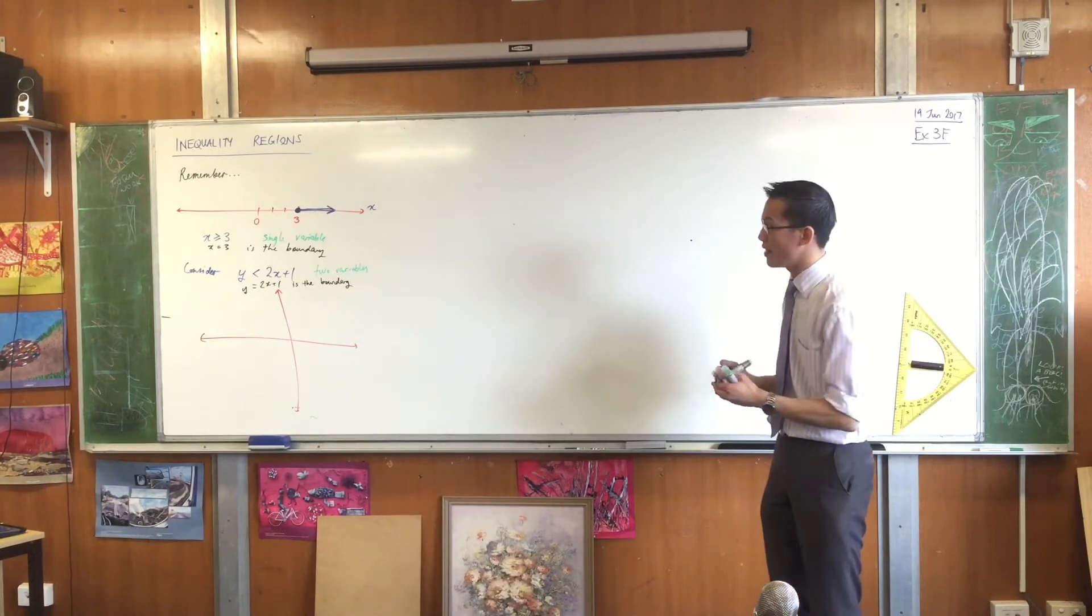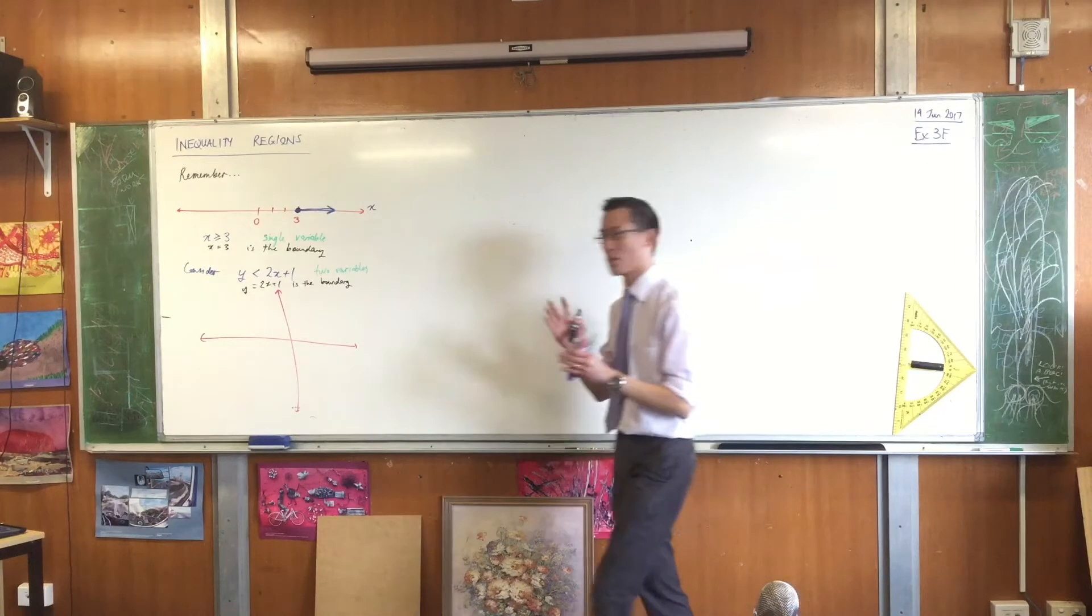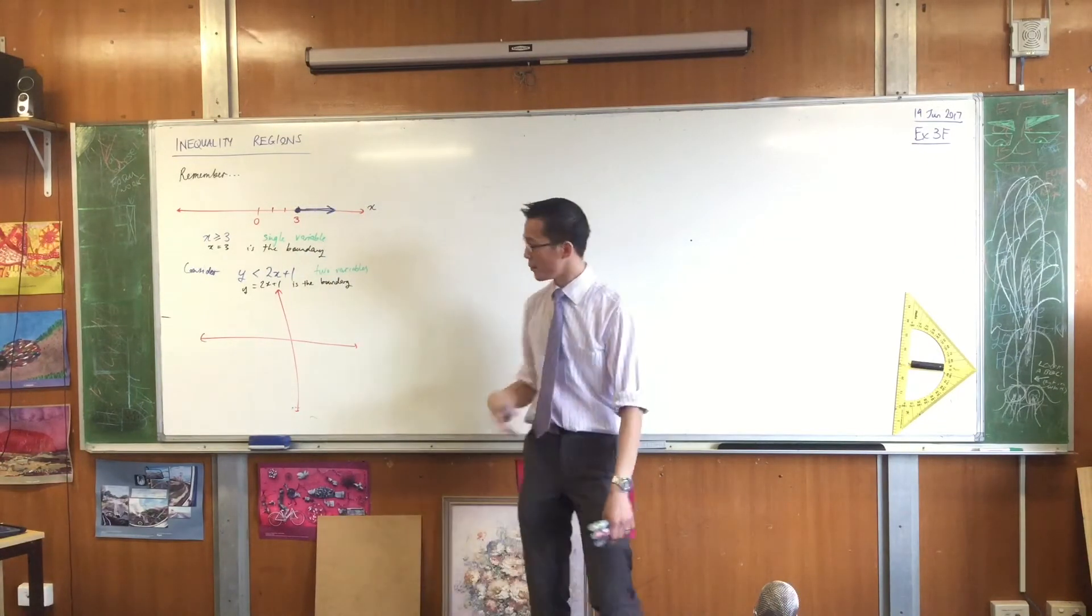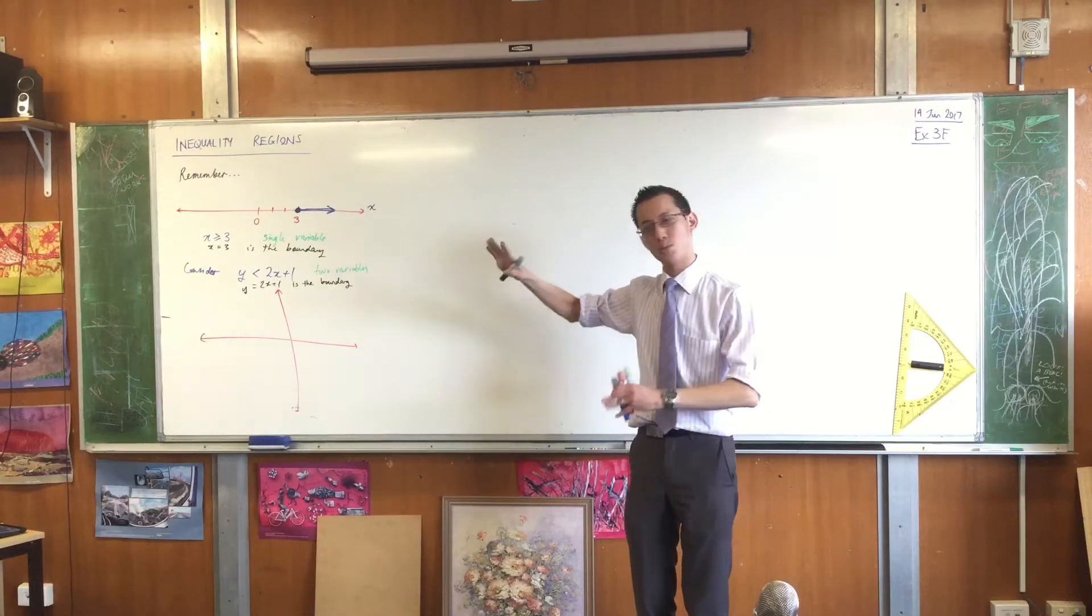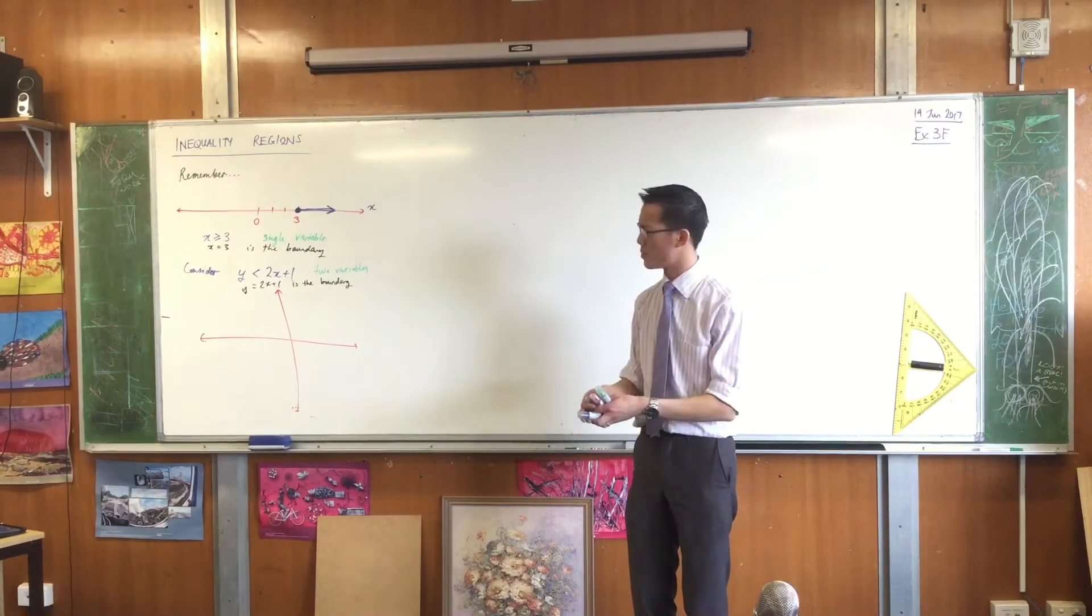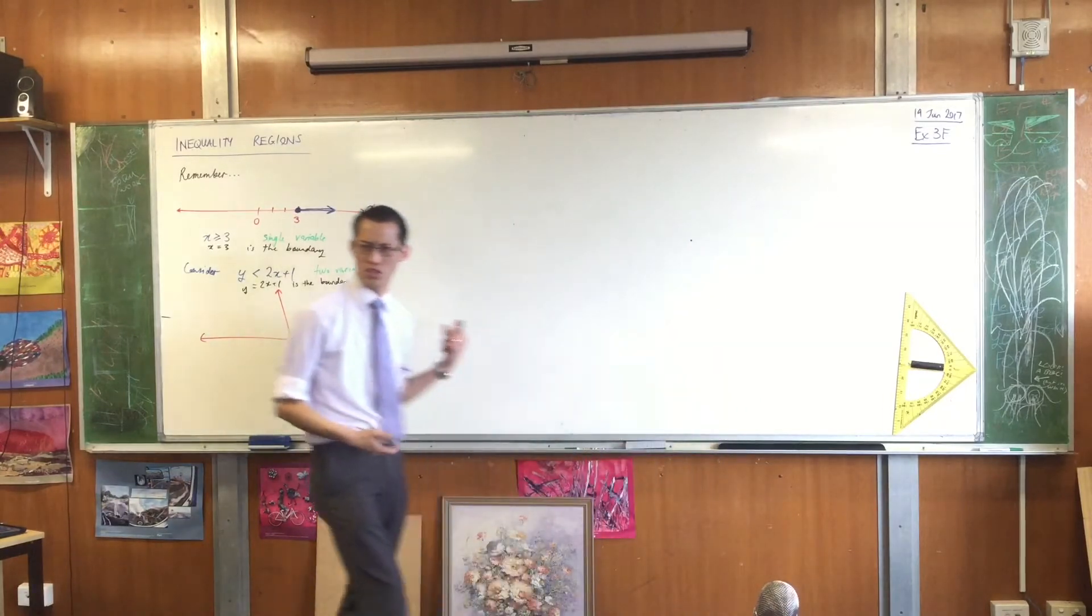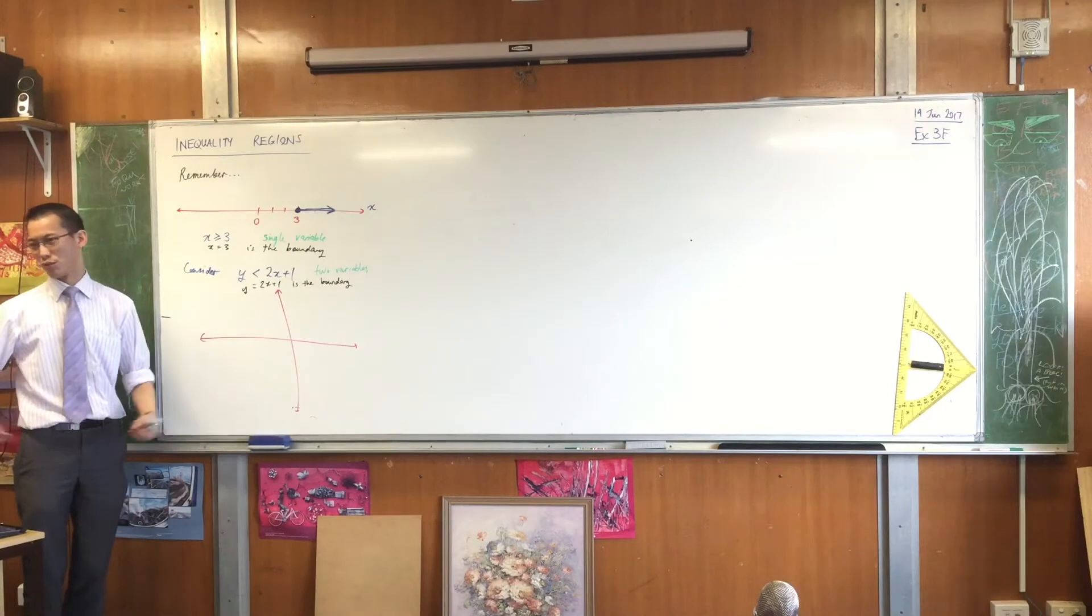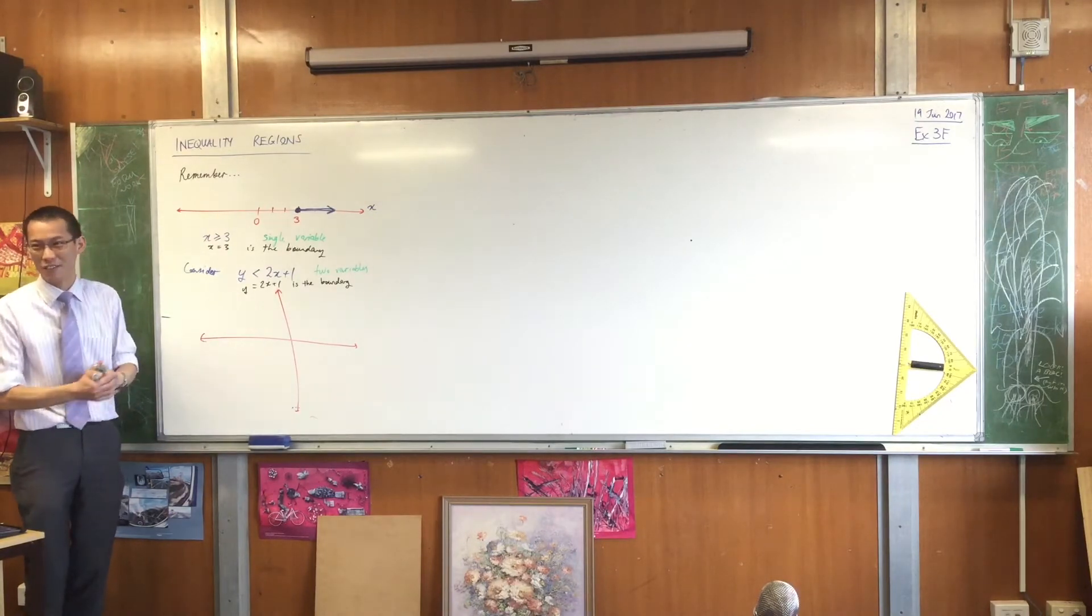Now, just like with inequalities on the number line, we have something different for including the boundary or not including the boundary. It's the same for these guys in two dimensions. The equivalent of a hollow circle is a dotted line. I know that's a bit confusing because we use dotted lines in quantitative geometry for something else, namely the asymptotes, but we just run out of ways to do that. So we're also going to use a dotted line for this.